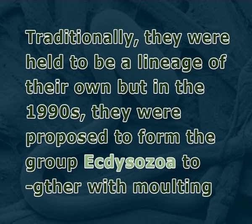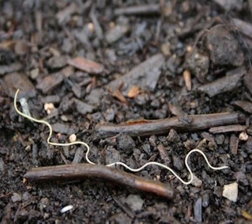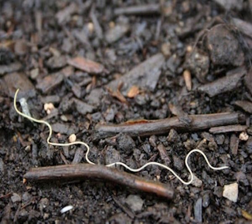The relationships of nematodes and their close relatives among the protostomian Metazoa are unresolved. Traditionally they were held to be a lineage of their own, but in the 1990s they were proposed to form the group Ecdysozoa together with molting animals such as arthropods. Morphological characters and molecular phylogenies agree with placement of roundworms as a sister taxon to the parasitic horsehair worms; together they make up the Nematoidea.